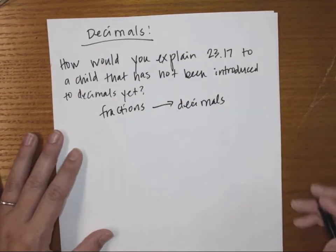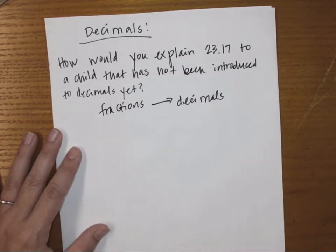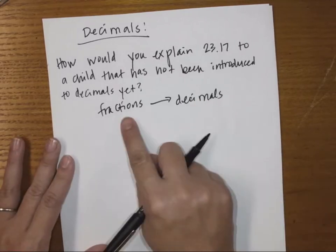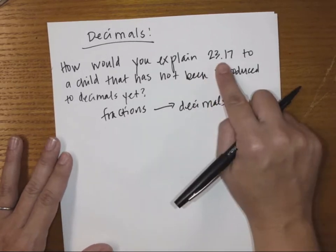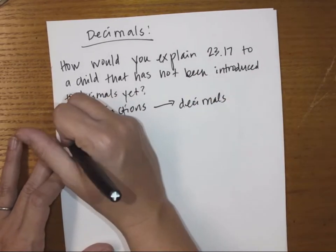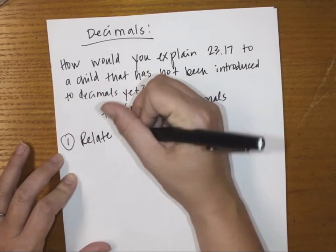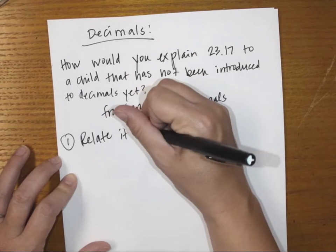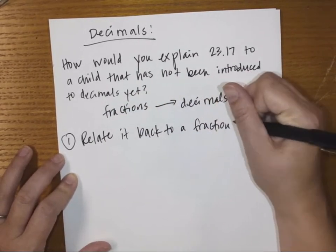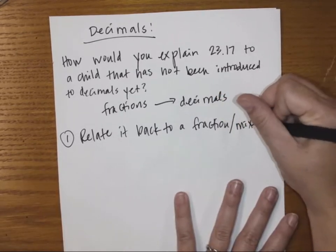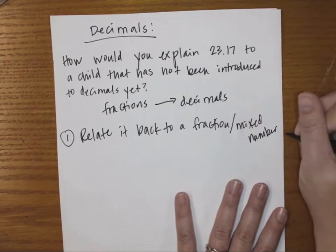Even though it seems strange, fractions are comfortable for students at the beginning and decimals are not, because decimals are new and fractions are already familiar. So the best way to explain the new concept of decimals is to relate it back to what they know — a fraction or a mixed number.